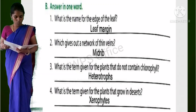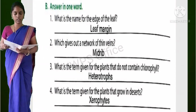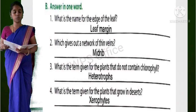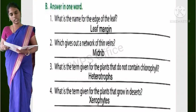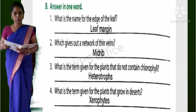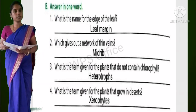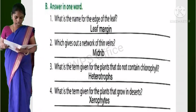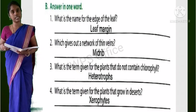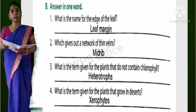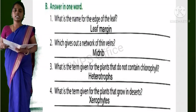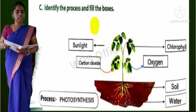Third one: What is the term given for the plants that do not contain chlorophyll? Answer is heterotrophs. Fourth one: What is the term given for the plants that grow in deserts? Answer is xerophytes.